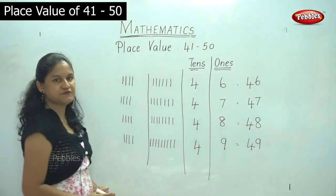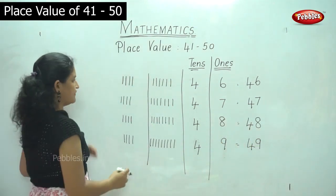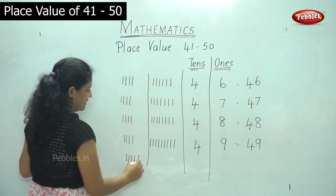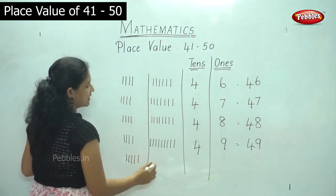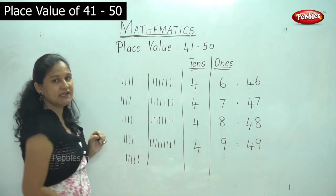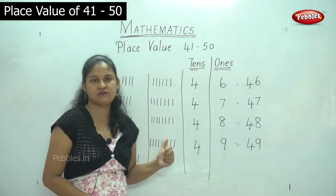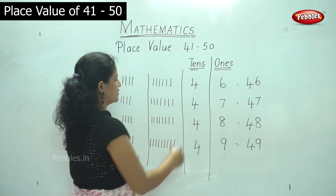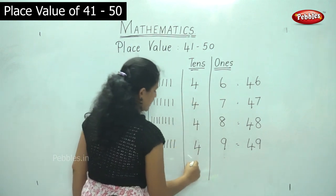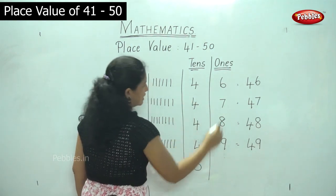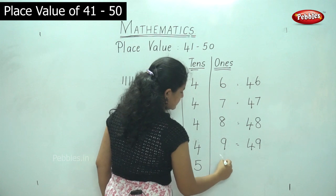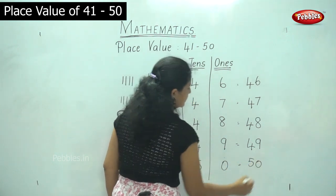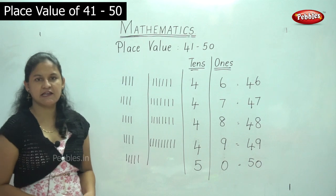And for number 50 I have in the tens place 1, 2, 3, 4, 5 and in the ones place I don't have any number. So that means 0. Zero means absence of something. So in the tens house I have 5 and in the ones place I have 0. That is number 50.